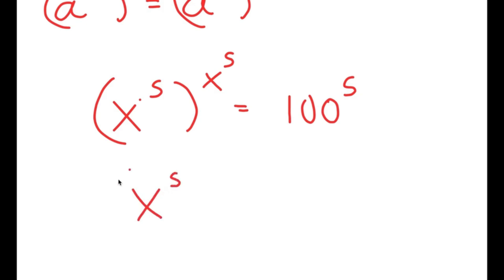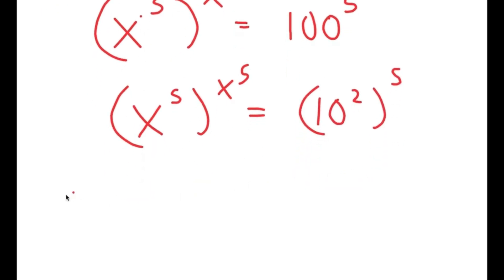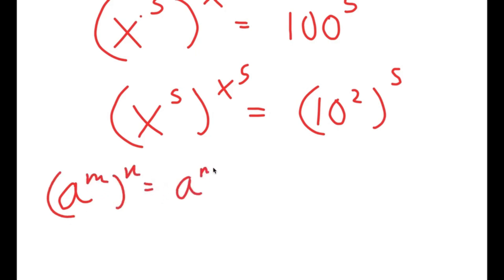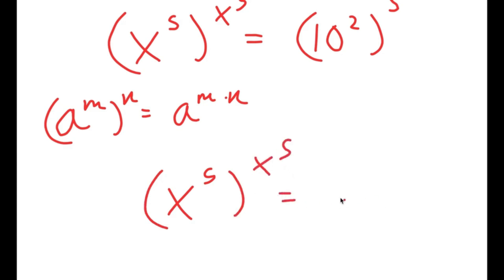Now, 100 I'm going to rewrite as 10 squared, so now I have 10 squared to the power of 5. Another property of exponents is that if I have something in the form a to the power of m to the power of n, this is equal to a to the power of m times n. So 10 to the power of 2 to the power of 5 equals 10 to the power of 2 times 5, which is 10 to the power of 10.